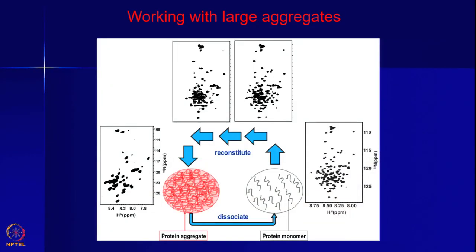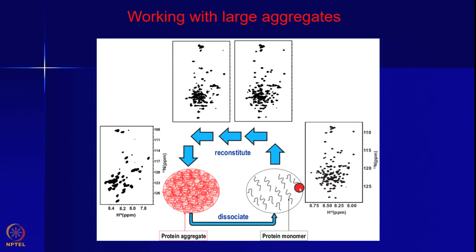We continue with the discussion of aggregates and how to use NMR to understand the process of self-association. Here we have the example of the same protein GED seen earlier in an aggregated state. Our challenge is to identify the structure of each molecule in this assembly. We can dissociate this into individual monomers, breaking the associated state into individual monomeric states, and when we make this monomer we will see a beautiful NMR spectrum because each one is a smaller molecule.